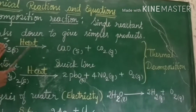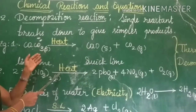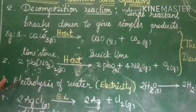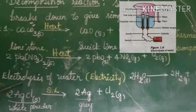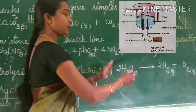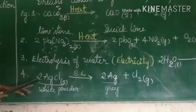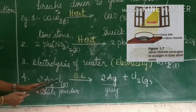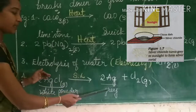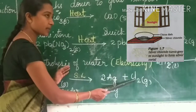The decomposition takes place with the help of heat energy — this kind of reaction is known as thermal decomposition reaction. Another example is electrolysis of water. During electrolysis of water, electricity is used, and water breaks down into hydrogen gas and oxygen gas. Also, white silver chloride powder, when exposed to sunlight, turns grey, breaking down into silver and chlorine gas — this is an example of photodecomposition.